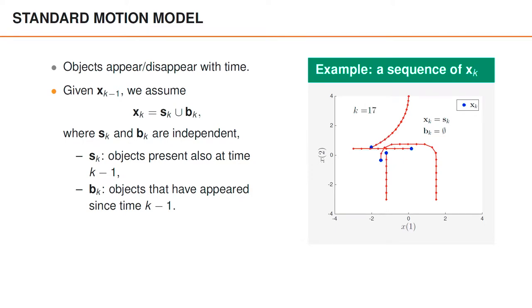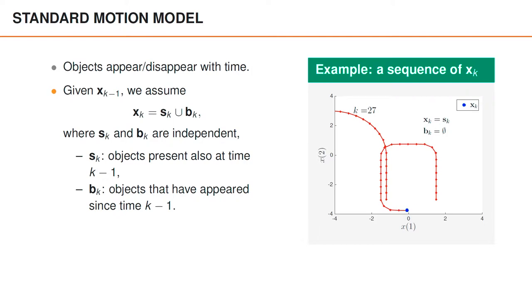However, it should be noted that objects disappear or die at a few time instances. This happens first at time 18, when one of the four objects has left the area. It still holds that xk and sk are the same, but sk now contains three objects, whereas xk-1 contains four. More objects disappear at time 24 and 28, and at both time instances, xk-1 contains one more object than sk.